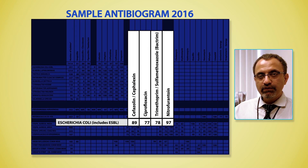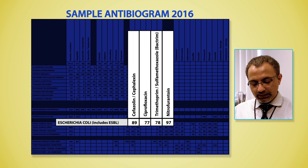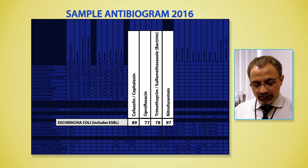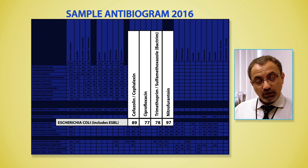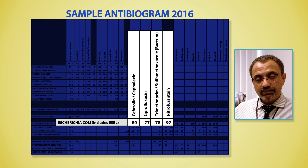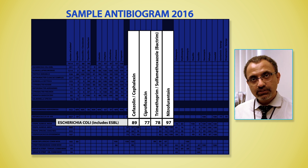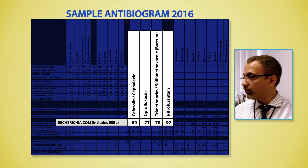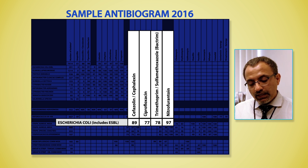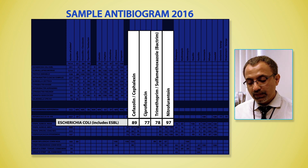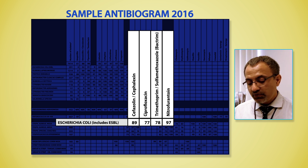In this case, when you focus on this patient and look at the antibiogram, you see that cephalexin susceptibility is 89%, ciprofloxacin is 77%, nitrofurantoin is 97%, and Bactrim is 78% for E. coli. As you can see, more than 20% of E. coli isolates are resistant to Bactrim and ciprofloxacin, whereas about 3% are resistant to nitrofurantoin.